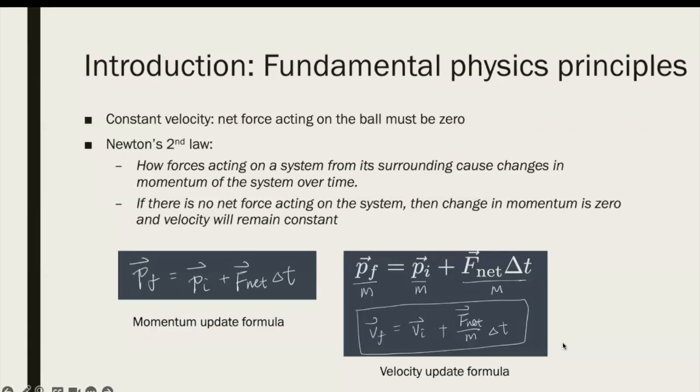The second one, about the velocity update formula, we can derive that from the first one by dividing by the mass. So we can find out the final velocity equals the initial velocity plus the net force divided by mass multiplied by the change in time. The second term on the right hand side is still zero since the net force is zero. So the final velocity equals the initial velocity.